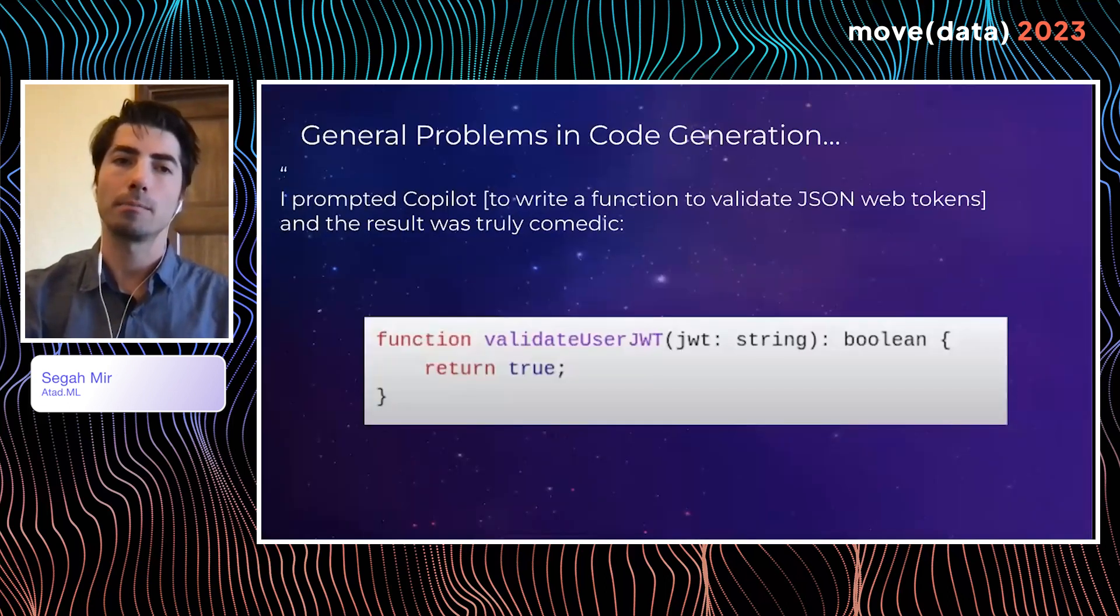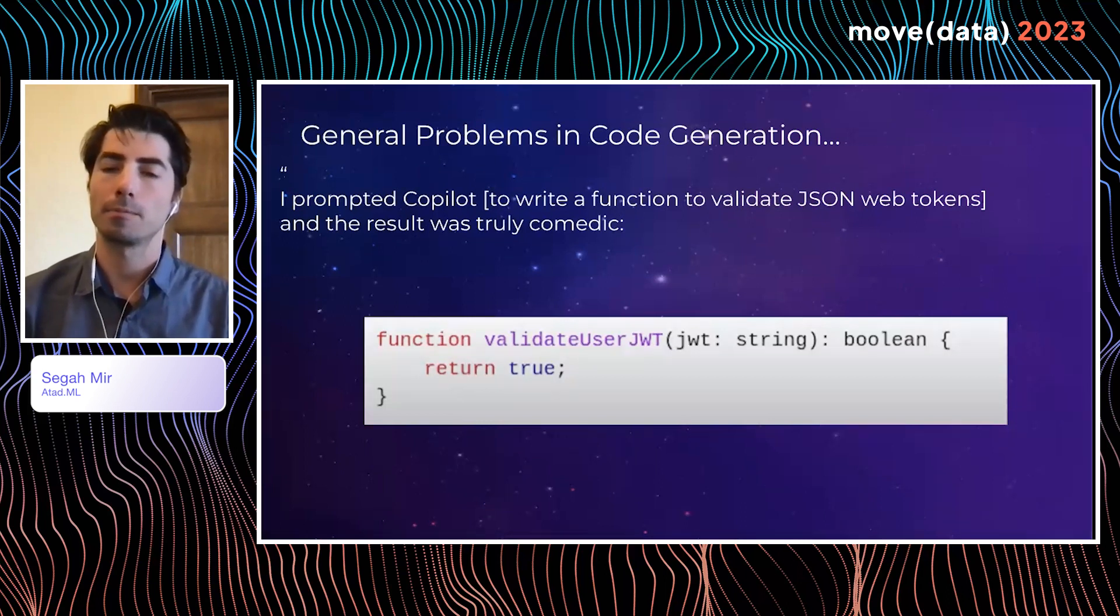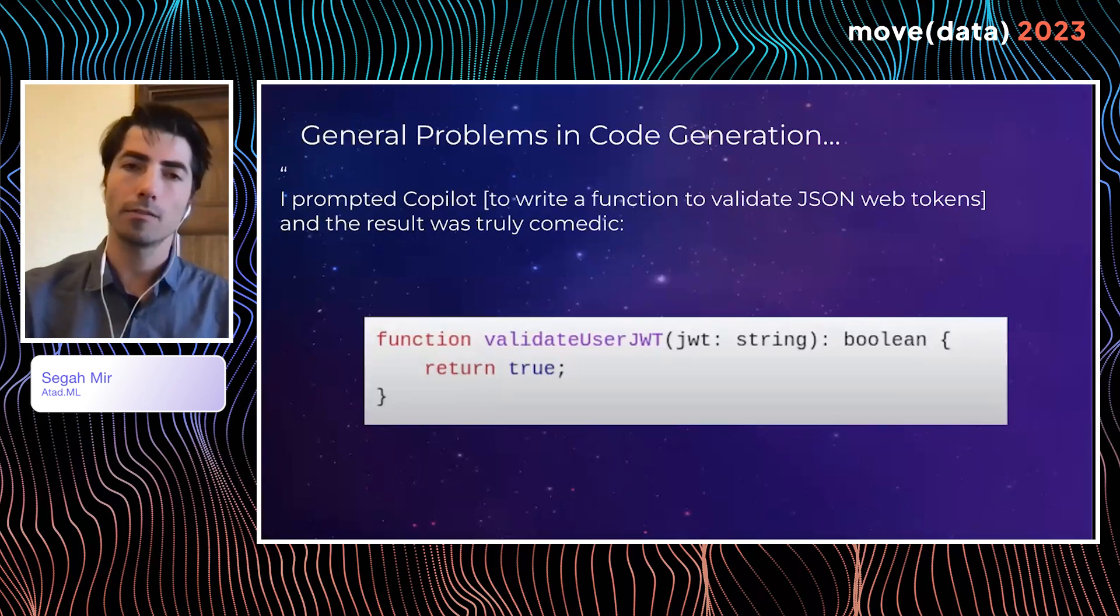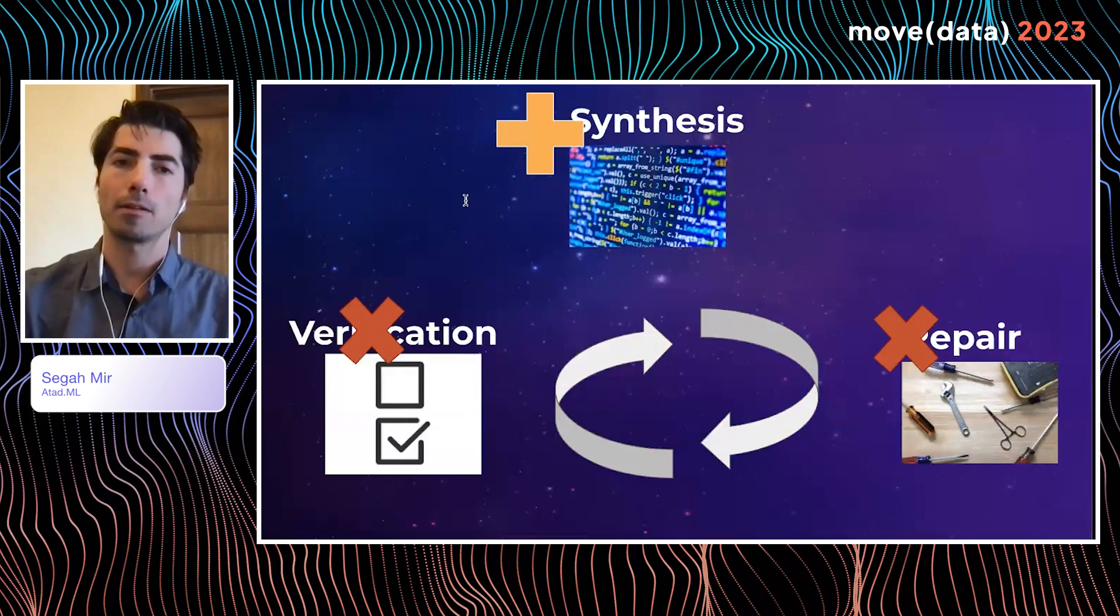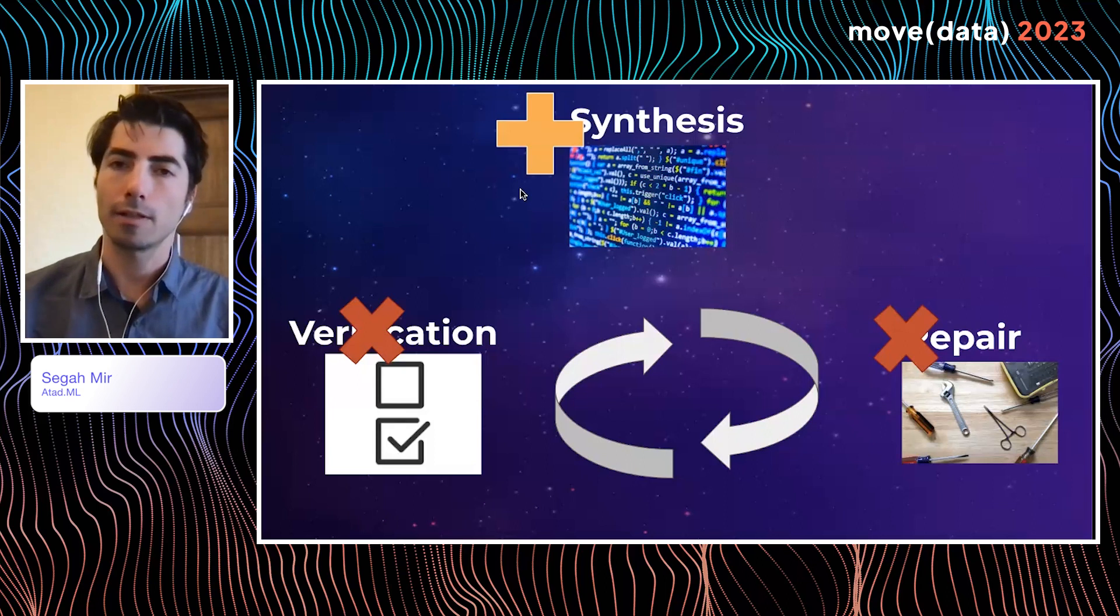So code generation by itself, when you're trying to use LLMs, obviously runs into some problems. One of those problems is hallucinations. And the reason why we have hallucinations is because in order to handle hallucinations, we actually need to do something beyond synthesis. We actually need to also do repair and verification. But the majority of LLMs that you see out there, it's just basically applying synthesis to more synthesis to more synthesis. And so the system becomes very unstable.